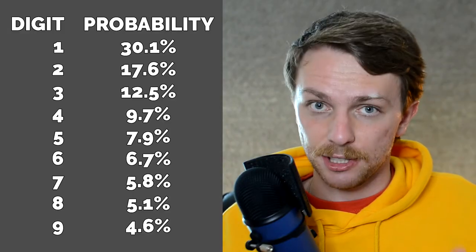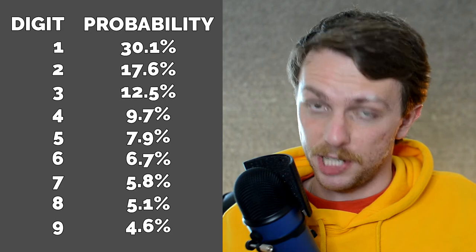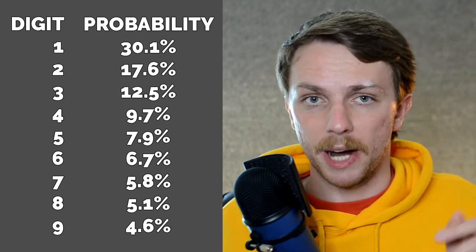Here is an example. Imagine we have a random sequence of numbers that contains millions of digits. Benford's Law states that number one appears on average around 30% of the time, while number nine appears less than 5% of the time. You can see the table with the rest of the numbers and their corresponding percentage appearances to my left.